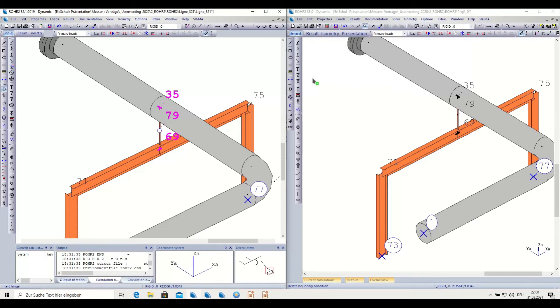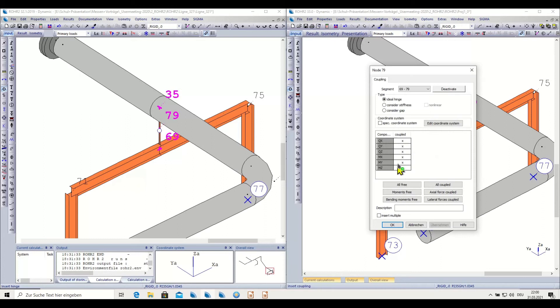The same function in the new version. I will choose the coupling symbol, I click on the node, and I say which directions are coupled now, and it would be only the QZ that is coupled. This would be again the linear hinge.